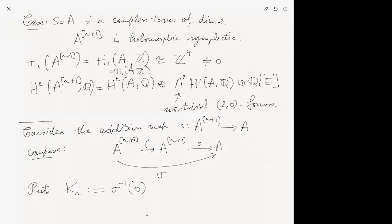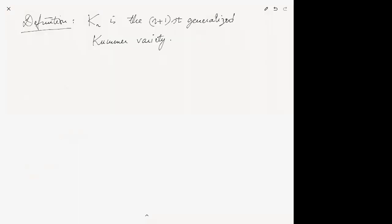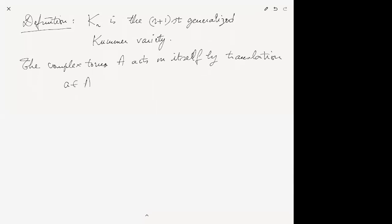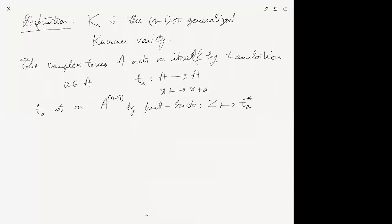Now let's look at the nice properties of K_r and this map induced by the addition map. First I need to introduce the action by translation. The complex torus A acts on itself by translation - I'll denote t_a: A → A the translation by a. It also acts on the Hilbert scheme by pullback: you take an artinian subscheme and send it to t_a*(ξ).